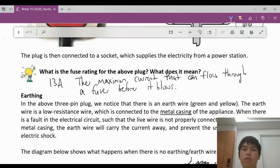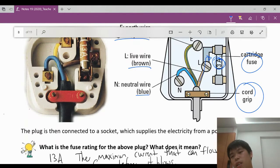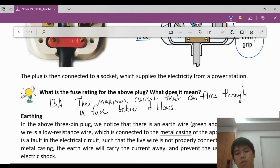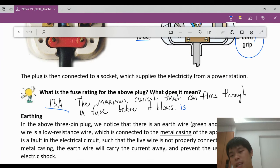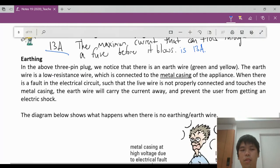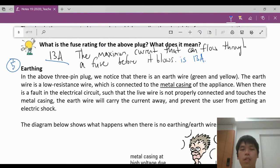So what is the fuse rating for the above plug? So in this plug here, you can see the fuse rating is 13 ampere. So we have 13 ampere. What does this mean? This means that the maximum current that can flow through a fuse before it blows is 13 ampere. So this is the maximum. So that is a three-pin plug to keep us safe.